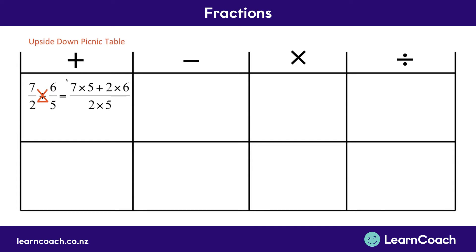Now we just have to simplify all of these numbers together. So first of all, we've got seven times five, which is 35. We've got two times six, which is 12, and we have two times five down the bottom, which is 10. Finally, we can add the 35 and the 12 together. This gives us an answer of 47 divided by 10, and we can't simplify that down anymore.